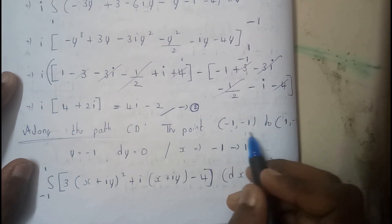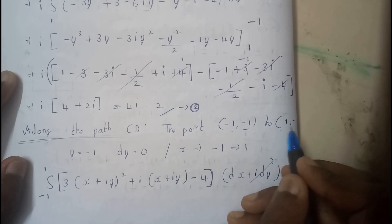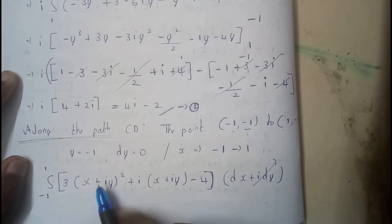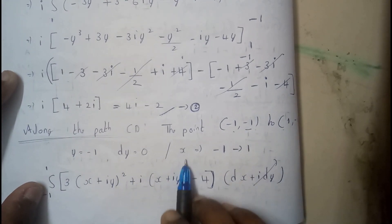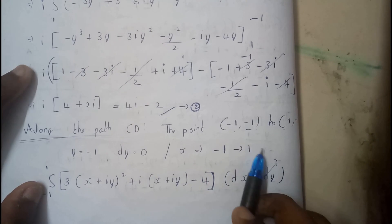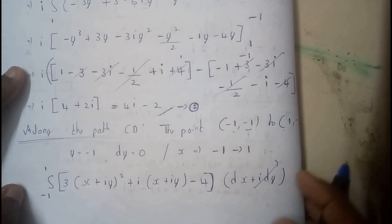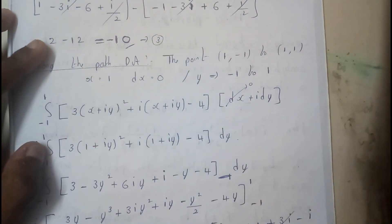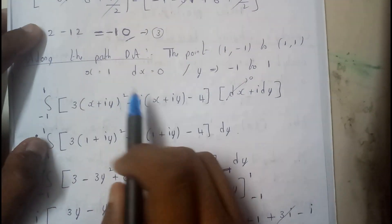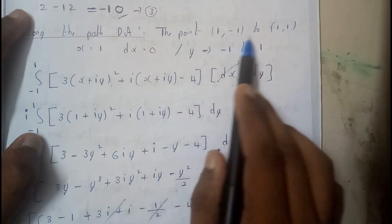Along path CD, between (−1,−1) and (1,−1), y is constant at −1, so dy = 0, and x varies from −1 to 1. Converting all terms in terms of x and integrating gives the value −10 for this path.